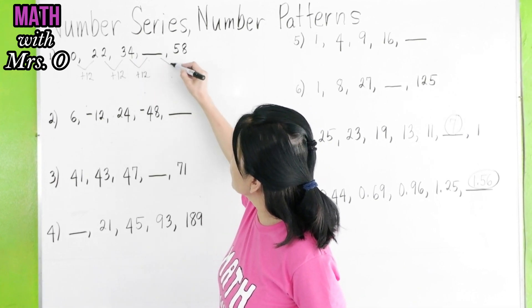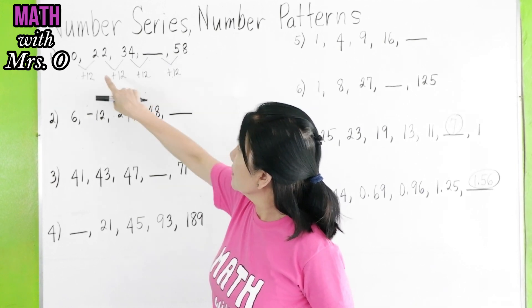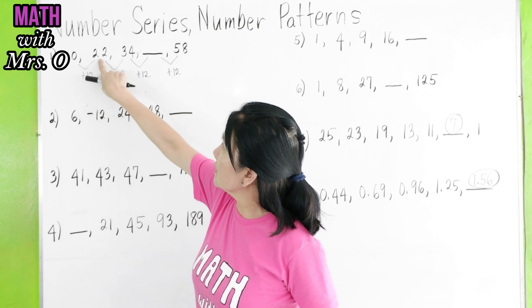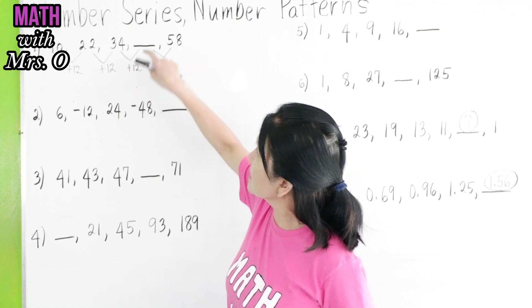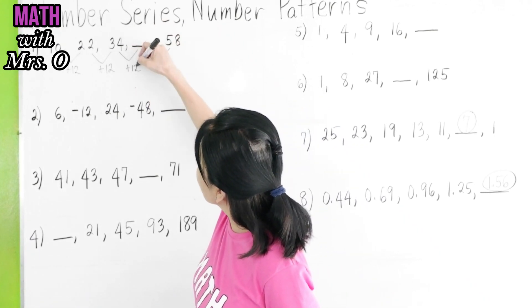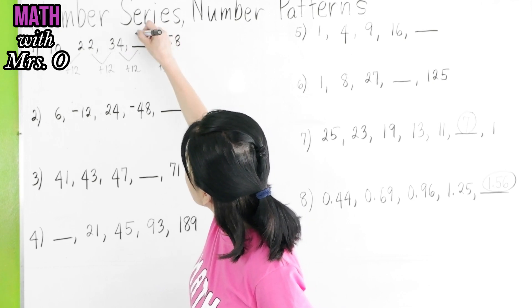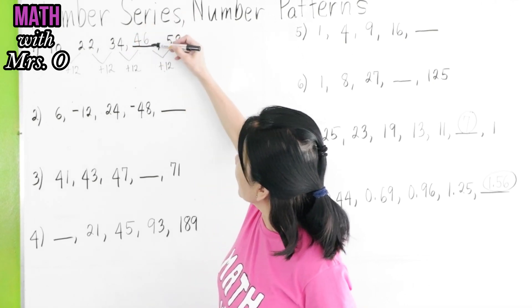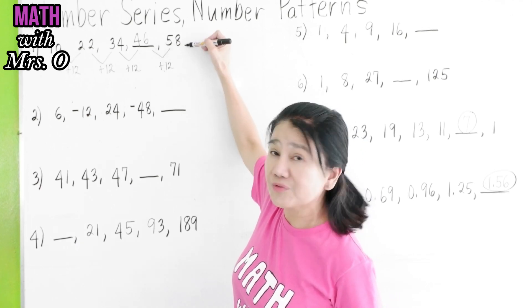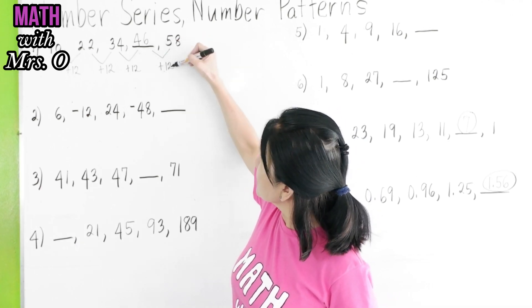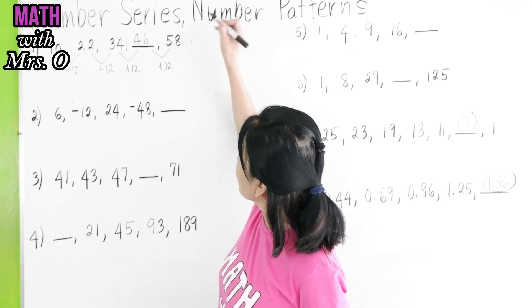So, if this is going to be a 12, this will also be a 12. So you see a pattern. 10 plus 12 is 22. 22 plus 12 gives you 34. 34 plus 12 is 46. If we add 46 and 12, are we going to get 58? Yes, the answer is correct.